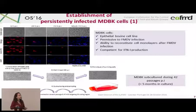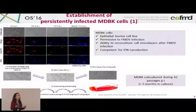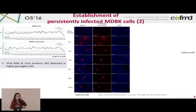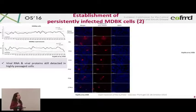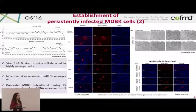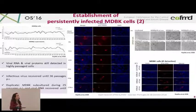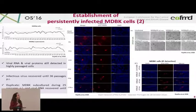We established persistent infection by subculturing the cells surviving the first inoculation, and we were able to maintain the cells during 42 passages — roughly five months in culture. Viral RNA and viral protein were still detected in highly passaged cells at passages 38 and 36. Infectious virus was also recovered until passage 36 post inoculation. We duplicated this experiment and were able to subculture during 25 passages post inoculation, with viral RNA recovered until passage 18, as well as infectious virus.